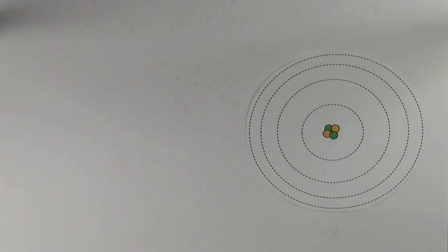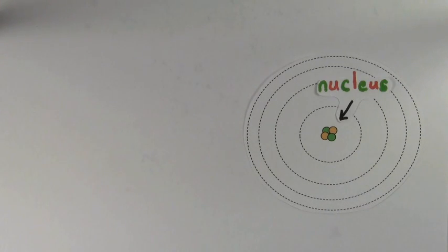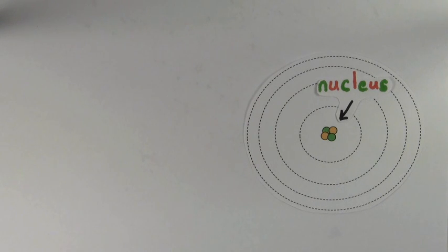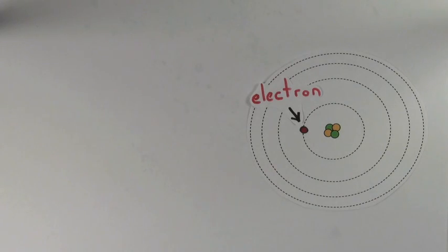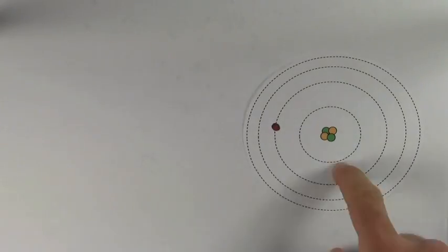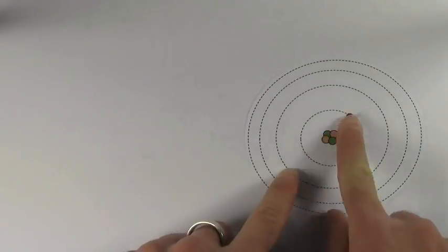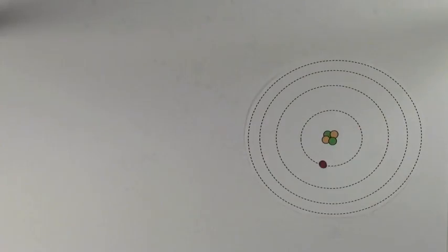Here's a very simplified model of an atom. The nucleus at the center of the atom is where the protons and neutrons live, but they're kind of boring because for the most part they just sit there. The real star of the show is the electron. The electron gets to do all the interesting stuff like move around, jump around, and bind with other atoms.